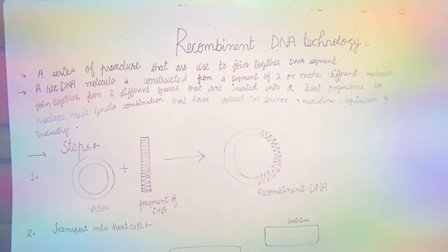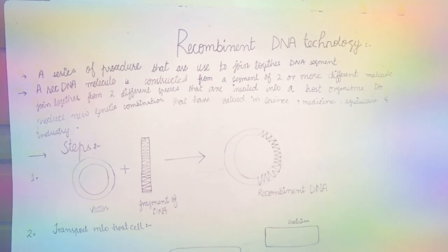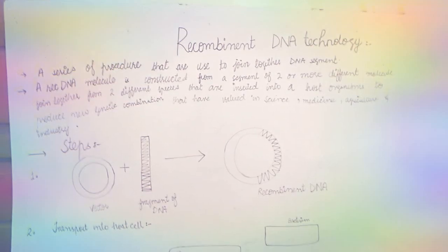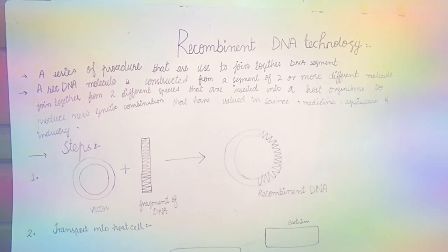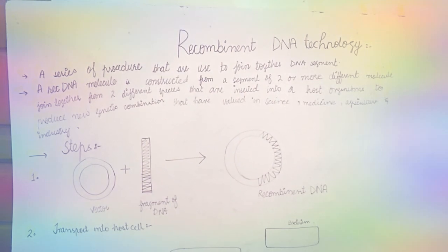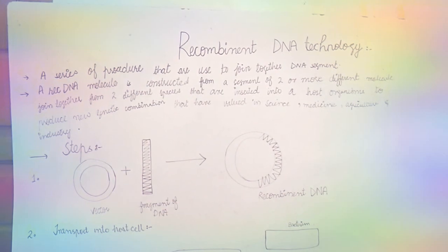A recombinant DNA molecule is constructed from segments of two or more different molecules joined together from different species that are inserted into a host organism to produce new genetic combinations that have value in science, medicine, agriculture, as well as industry.